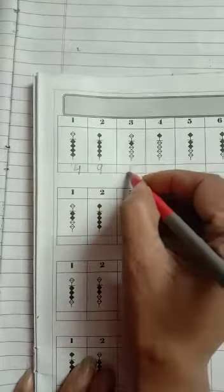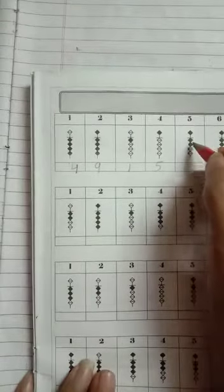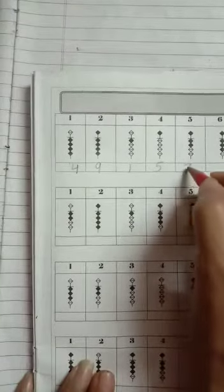This one is 1. This one is upper unit 5. This one is 5, 6, 7. So we have to write down 7.